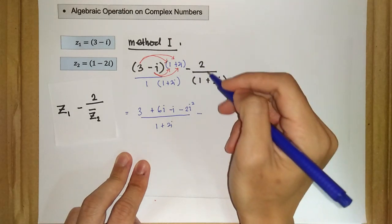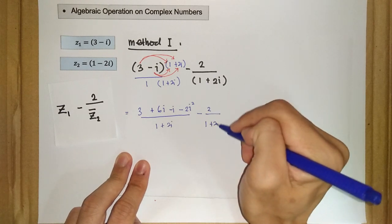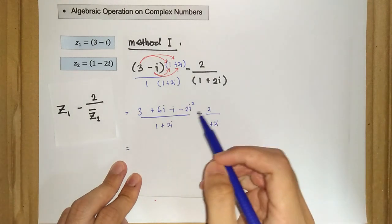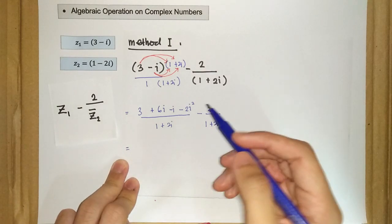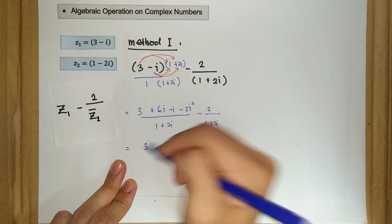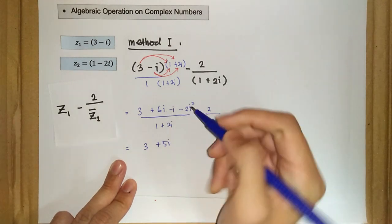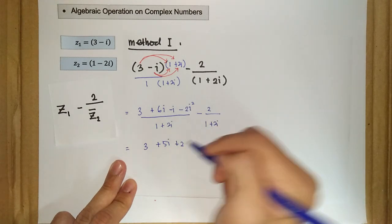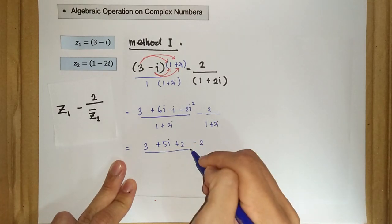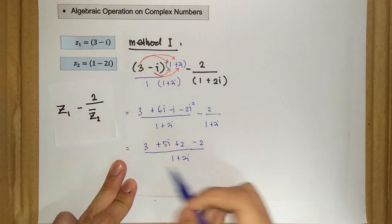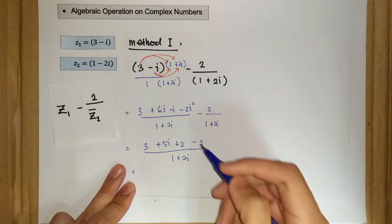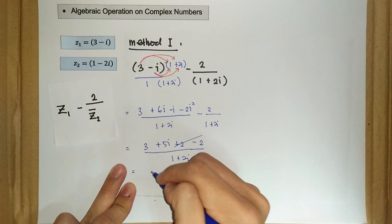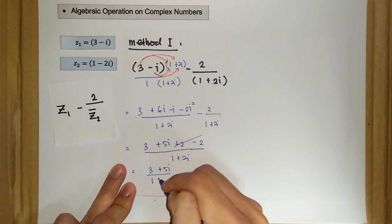These two terms now have the same denominator, so we can merge them into one single fraction. We have 3, then 6i minus i gives plus 5i. For the i squared term: i squared is negative 1, so negative 1 times negative 2 gives plus 2, which cancels with the minus 2. So we get 3 plus 0, giving us 3 plus 5i over 1 plus 2i.